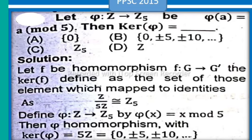With kernel of phi equals 5Z, which is 0, plus minus 5, plus minus 10, plus minus 15, plus minus 20. It means integers that are 0, plus minus 1, plus minus 2, plus minus 3.